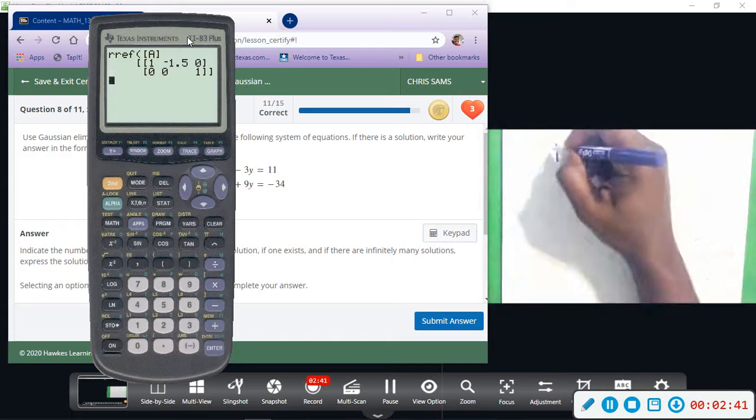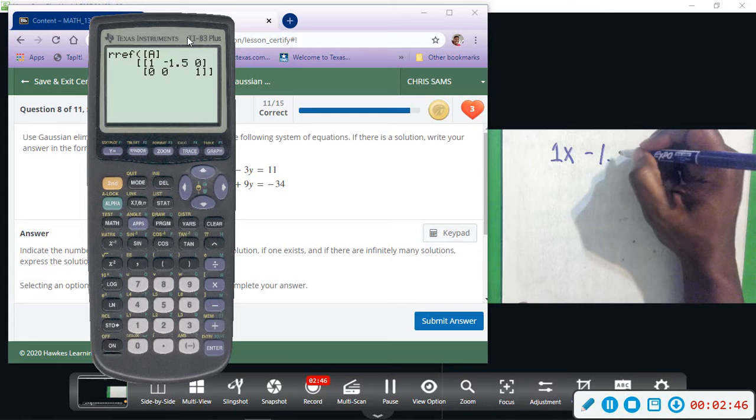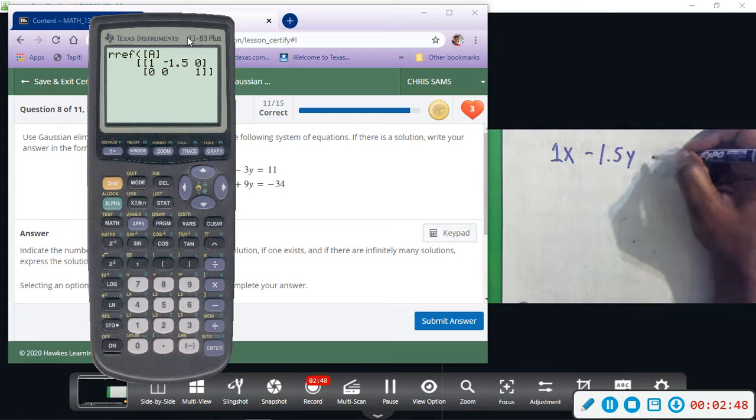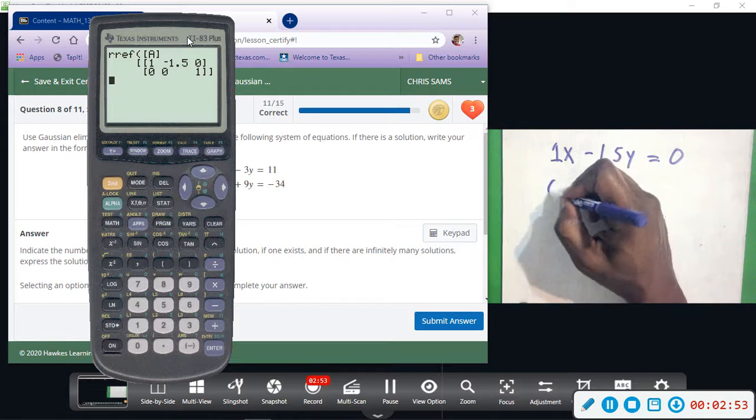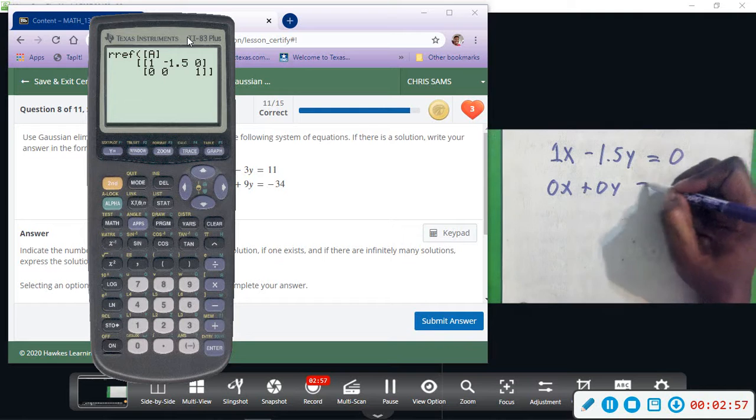This is what the calculator is giving us as far as an equation. It's saying that 1x minus 1.5y equals 0, and then on the next row saying 0x plus 0y equals 1.